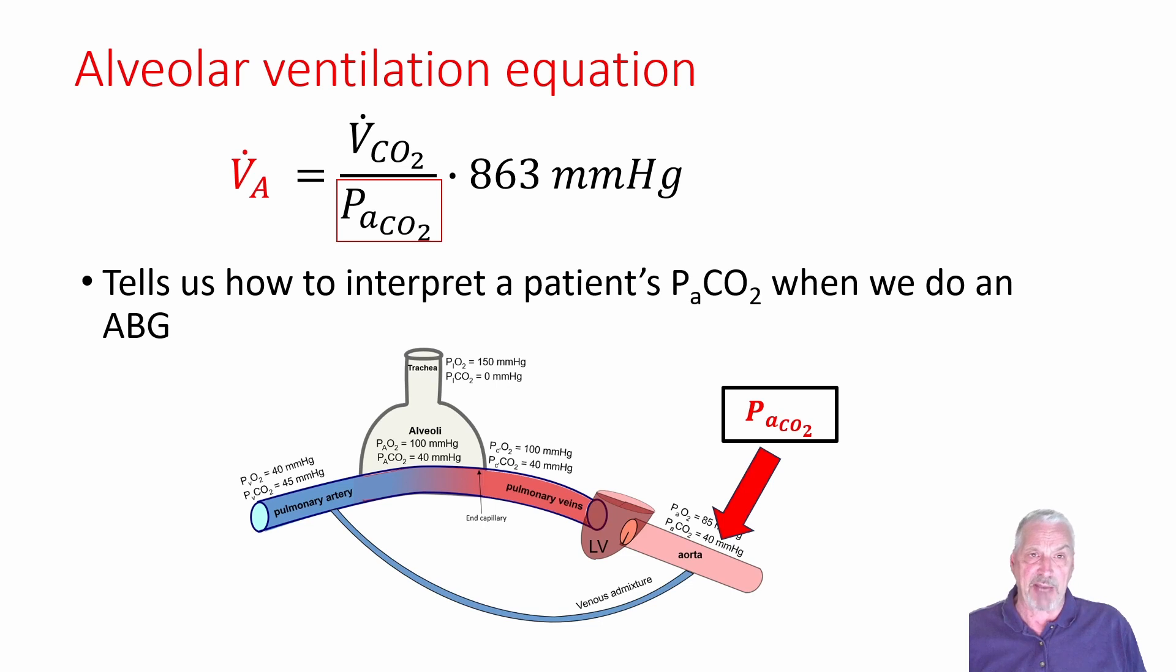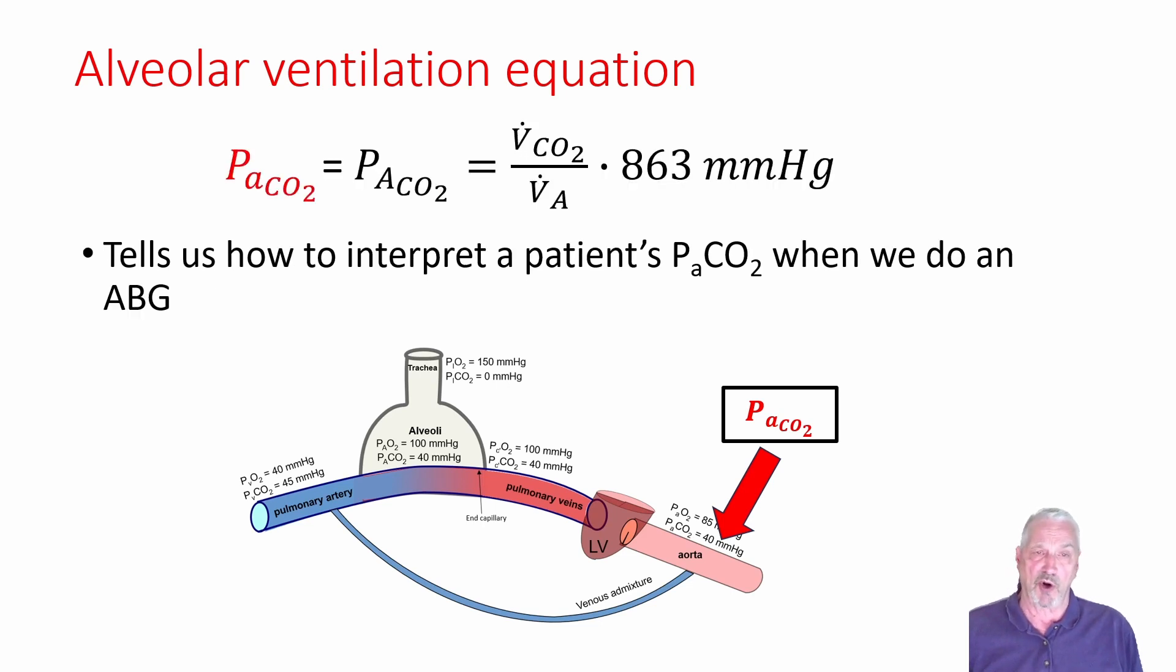Even though this is sometimes seen in textbooks, I think it's much more appropriate to write the Alveolar Ventilation equation this way so that we can focus on the left-hand side, which is what we're going to use as clinicians and focus on what makes up a patient's arterial CO2. I've added a term here, P-big-A CO2, because numerically, P-little-a CO2 is going to be numerically equivalent to P-big-A CO2 in patients because of the way gas exchange works.